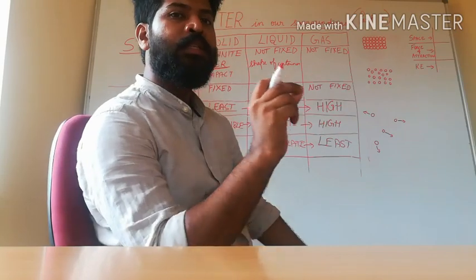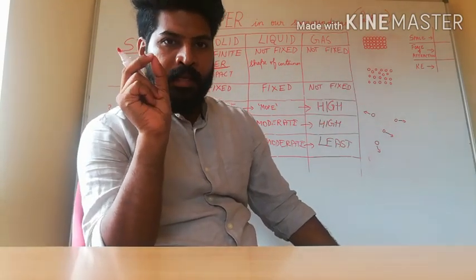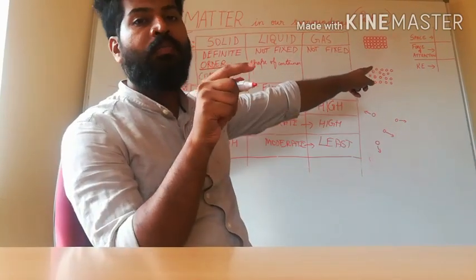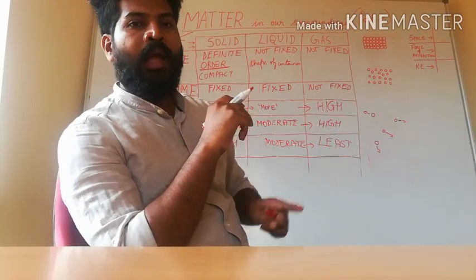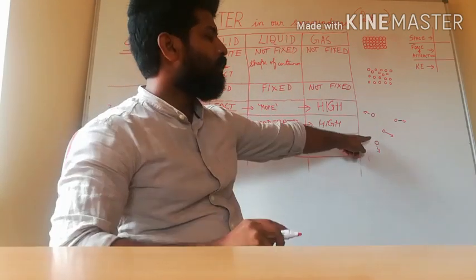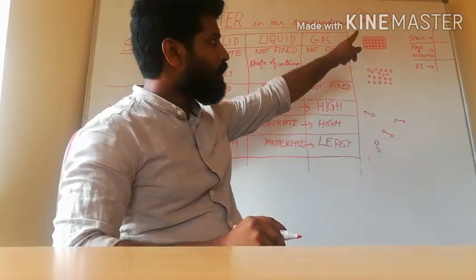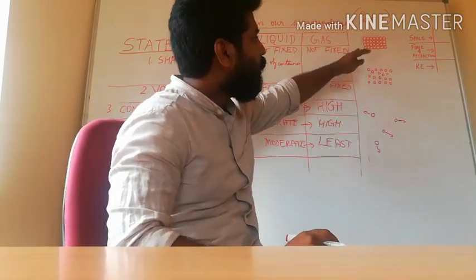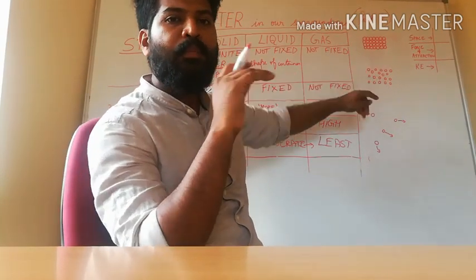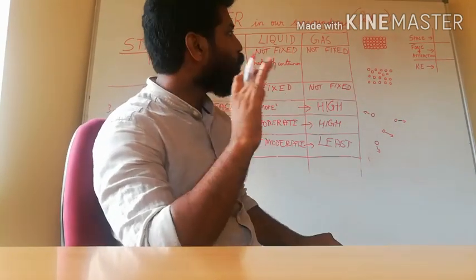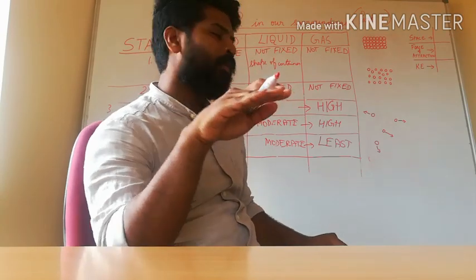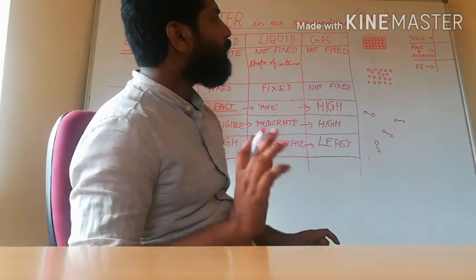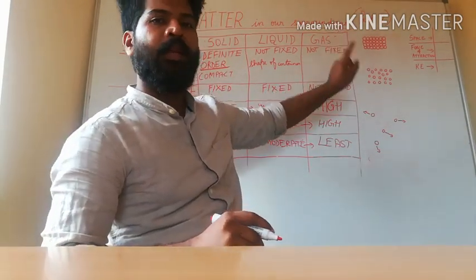The existence of the three forms of matter is due to the three properties of particles. Higher the space, higher the kinetic energy — they are gases. Lesser the space, lesser the kinetic energy — they are solids. In between, the spaces are moderate, kinetic energy is also moderate, force of attraction is also moderate — matter exists as liquids.